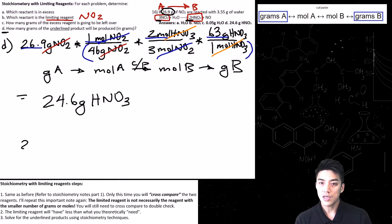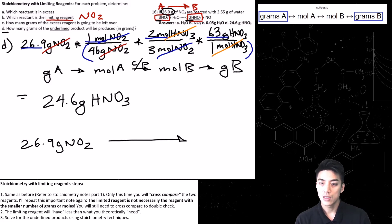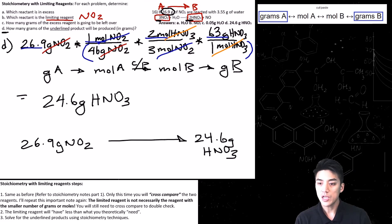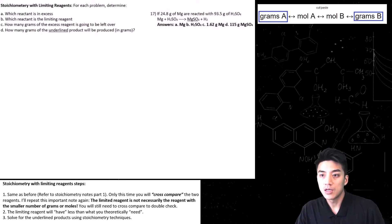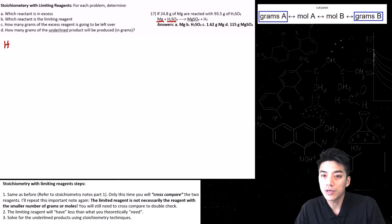So once again, this is saying: if you have 26.9 grams of NO2, it can potentially produce 24.6 grams of HNO3. The limiting reagent always determines the maximum amount of product that can be made. In number 17, we are going to cross-compare magnesium and H2SO4.